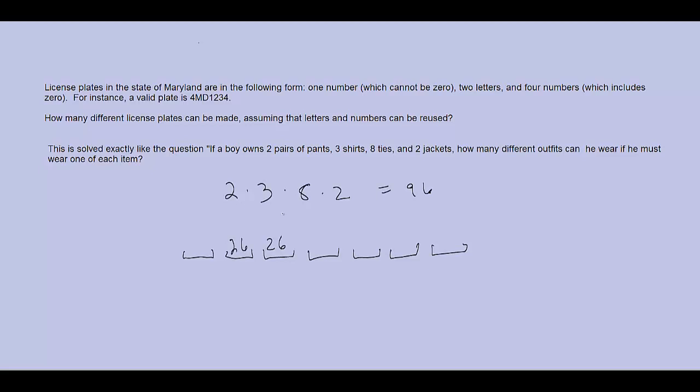Now the first number cannot be zero. That means it can be one, two, three, four, five, six, seven, eight, or nine. There's nine digits that are not zero.